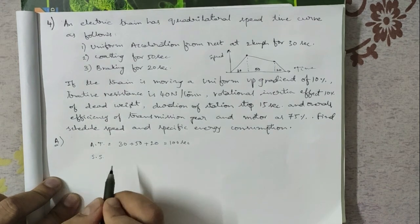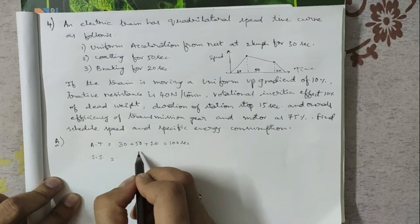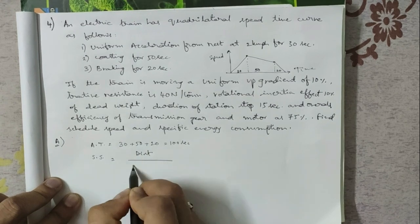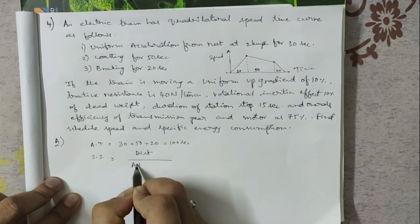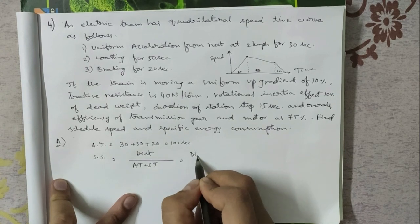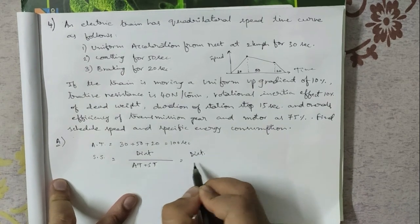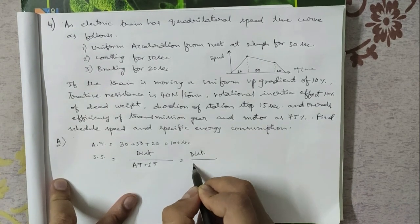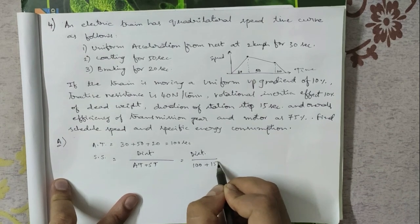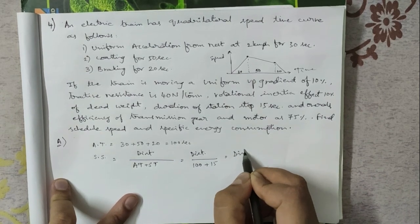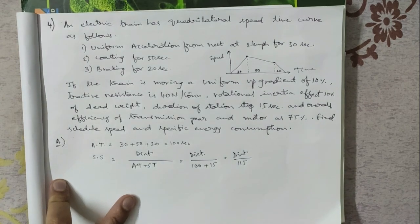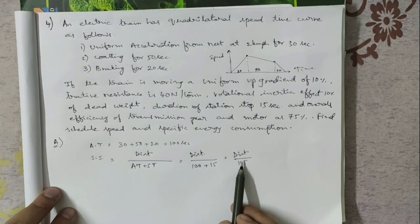The schedule speed formula is: schedule speed = distance divided by (actual time + stop time). The actual time is 100 seconds and the stopping time is 15 seconds, giving a denominator of 115 seconds. We need to find the distance first.